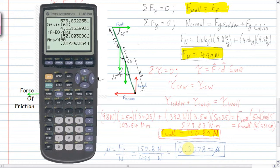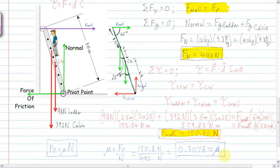That is the required coefficient of friction at the ground so that the ladder does not slide. Any more than that value is fine; any less than that and the ladder is going to slide out.